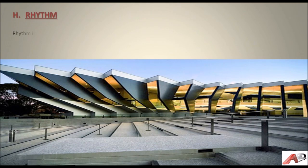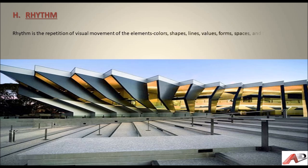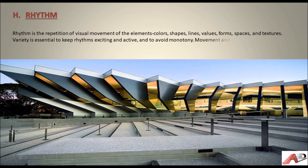Rhythm is the repetition of visual movement of the elements — colors, shapes, lines, values, forms, spaces, and textures. Variety is essential to keep rhythms exciting and active and to avoid monotony. Movement and rhythm work together to create the visual equivalent of a musical beat.